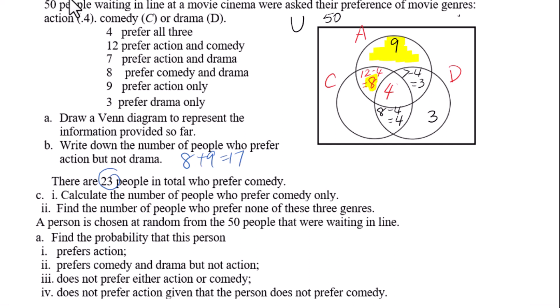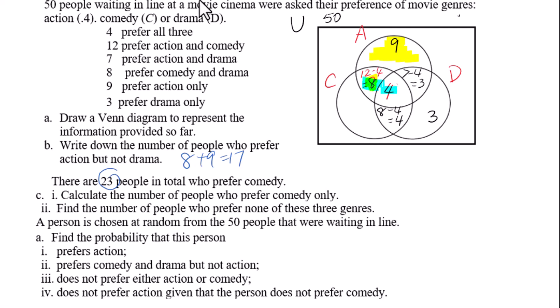There are 23 people in total who prefer comedy. For part c1, calculate the number of people who prefer comedy only. Comedy only is found using: 23 minus 8 minus 4 minus 4 equals 7. So 7 people prefer comedy only.